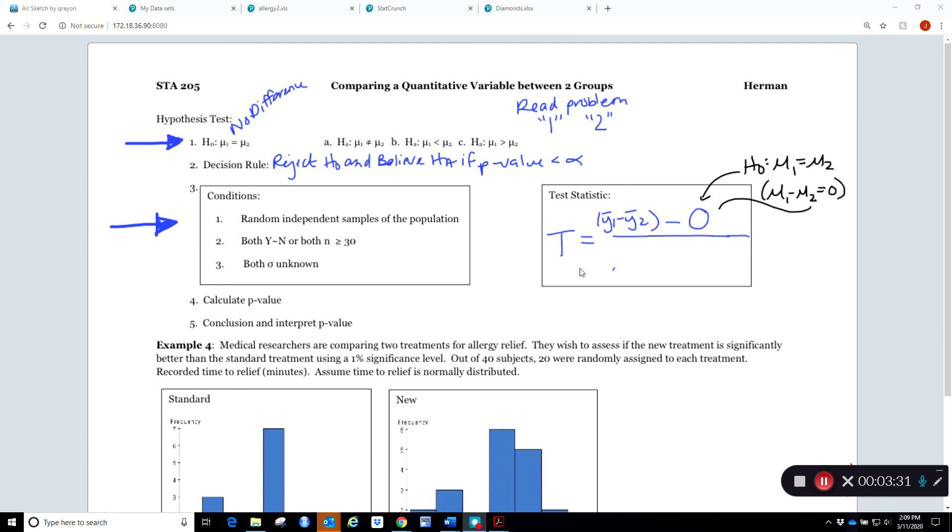What we divide by is our standard error, which we're going to see from a similar formula back from the confidence interval. We have our s1 squared over n1 plus our s2 squared over n2. We're not actually going to do this entire calculation by hand - you could - but we're going to use StatCrunch to find the pieces of it to calculate it as well.